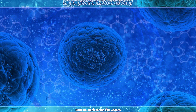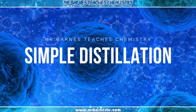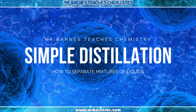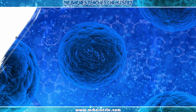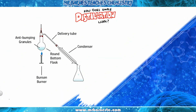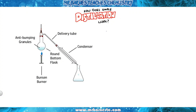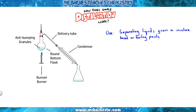Hi guys, welcome to this video looking at how simple distillation can be used to separate a mixture of liquids. Simple distillation separates liquids from a mixture based on their boiling points. The boiling point is the physical property used to separate those liquids.